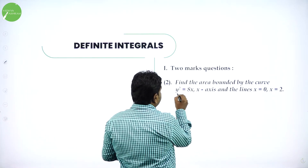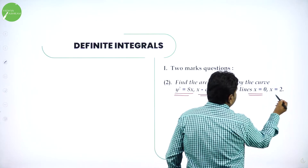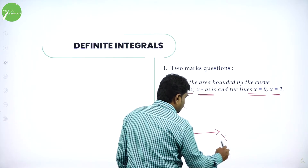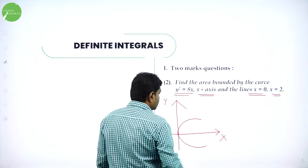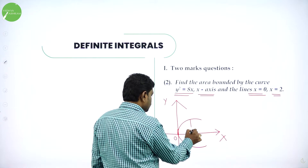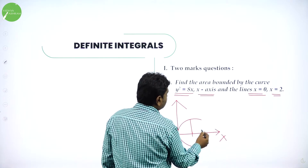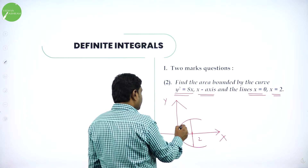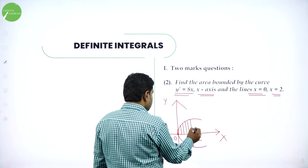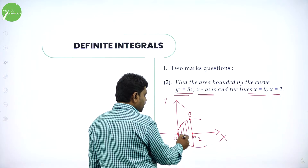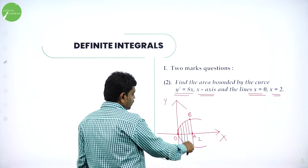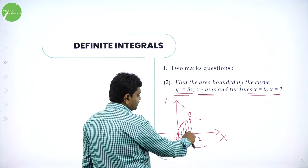Find the area bounded by the curve y² = 8x, x-axis, and lines x = 0 and x = 2. Y² = 8x is a parabola (y² = 4ax form). X = 0 means y-axis; x = 2 means draw a vertical line at 2 on the x-axis. This is a y² parabola. Now find the area bounded by the curve, x-axis, and the lines. I will find the upper part, and the lower part is equal — so multiply by 2. Name points O, A, B.